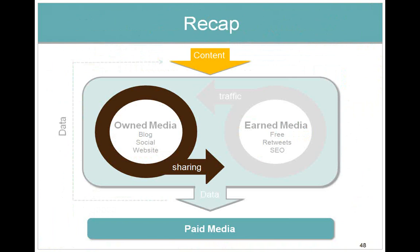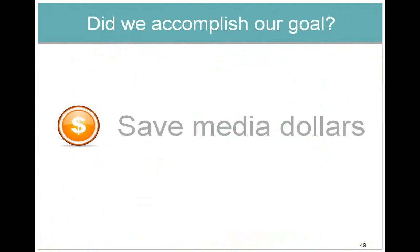Recap: create your content, put it out to earned and owned, look at the data it's generating, and then amplify what's working. Very simple plan, very effective — we've seen this work over and over again. This plan allows you to quickly test a few pieces of content and reduce your media dollars by amplifying what works. If it works for your owned and earned audience, it will have a better chance of succeeding with a paid media audience, because you're likely trying to attract the same audience you already have.